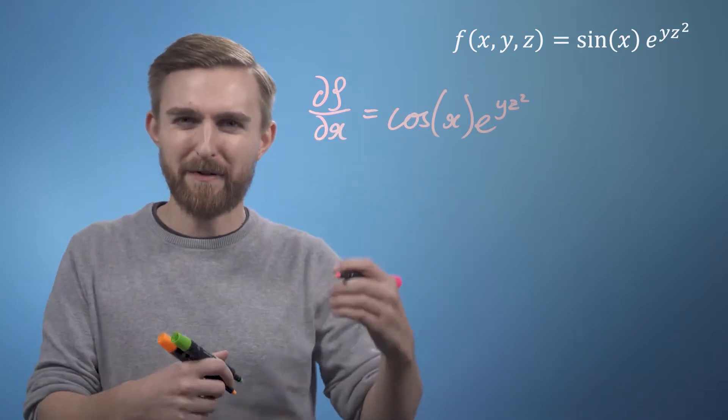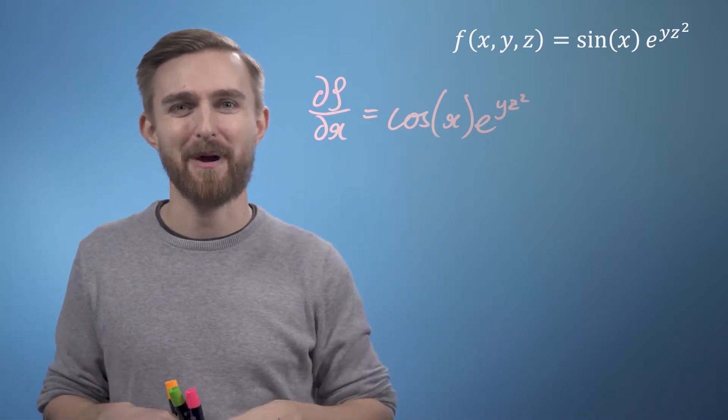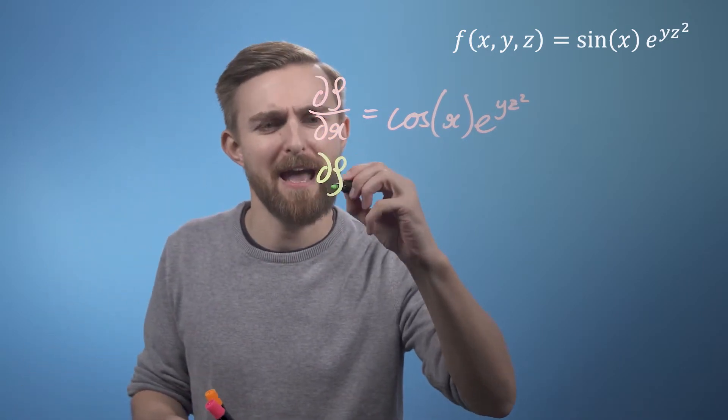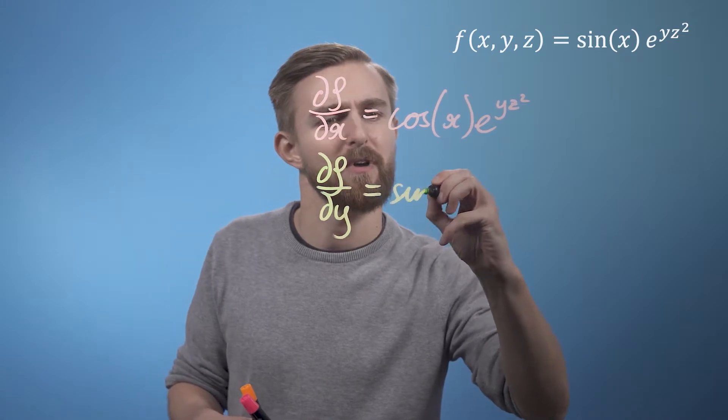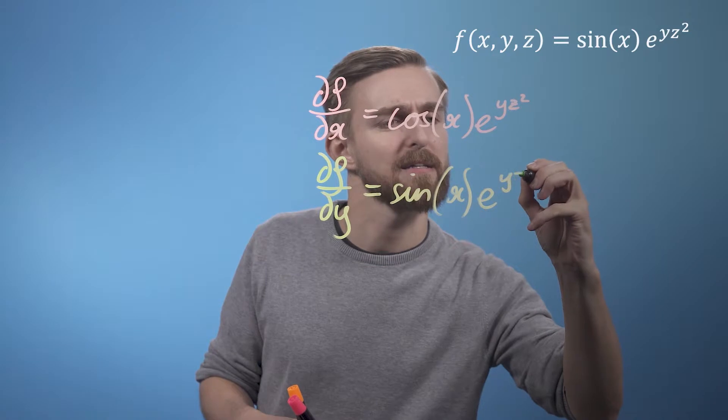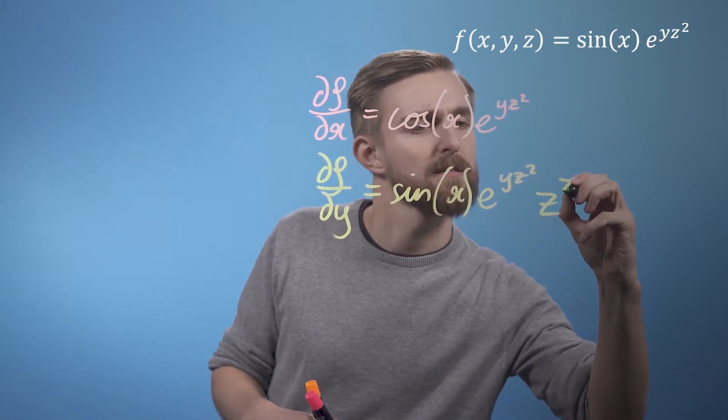And the derivative of y z squared with respect to y is just z squared. So we can write df by dy is going to equal sine of x e to the y z squared multiplied by z squared.